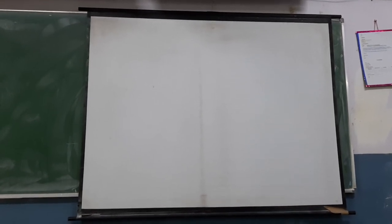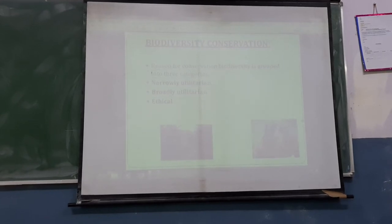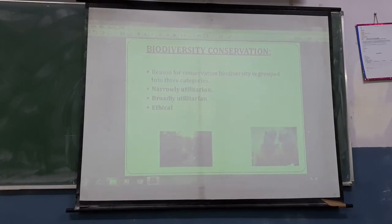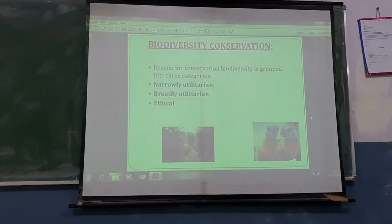Now, biodiversity conservation — we have discussed the four quartets. Why should we conserve biodiversity? The reasons are: narrowly utilitarian purpose, broadly utilitarian purpose, and ethical purpose. There is an ethical dimension too — many of us have associated plants with religion. For example, Tulsi is found in temples, the Banyan tree is associated with worship.